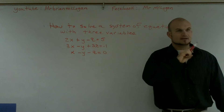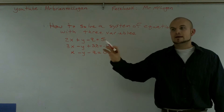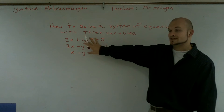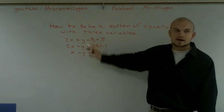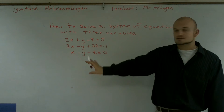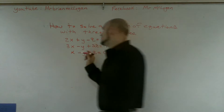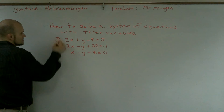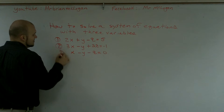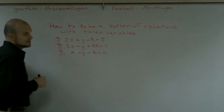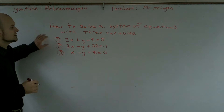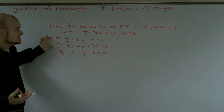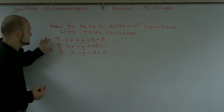Remember in elimination, I had to multiply an equation by a multiplier to get the same coefficient? Here, that work is already done for us, so I'm in good shape trying to eliminate the y's. What I'm going to do is give a number to each equation, and then eliminate a variable using the elimination technique for equations one and two.